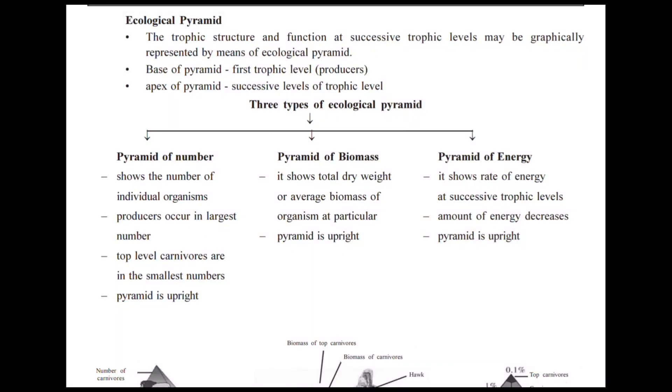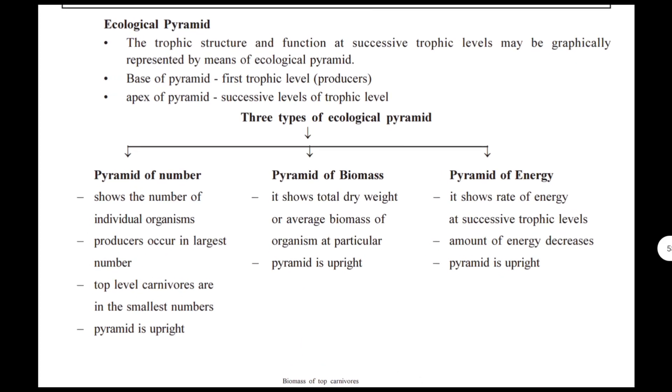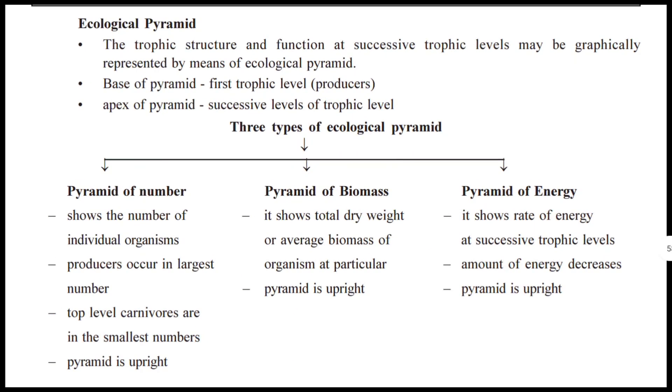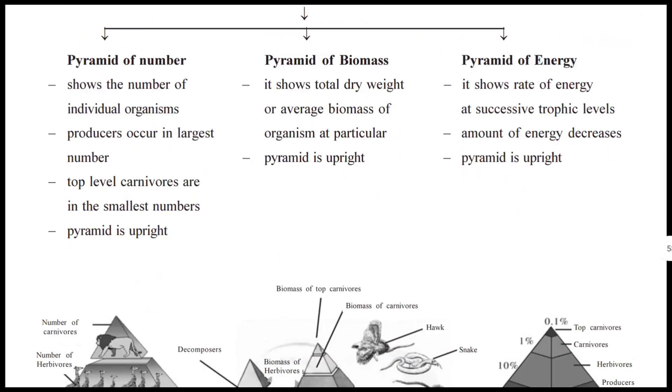This is the second part of ecological MCQ. Here we are starting with the ecological pyramid. There are only three types of pyramids: number, biomass, and energy-based pyramids.